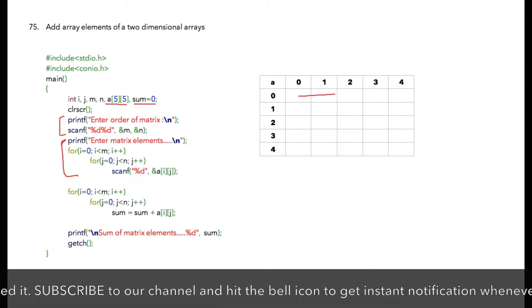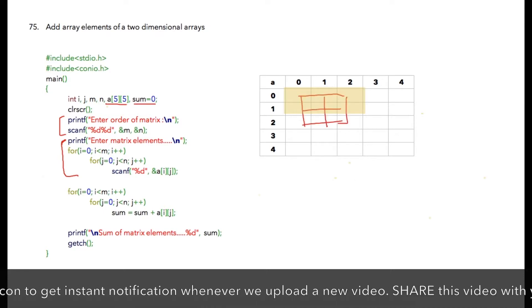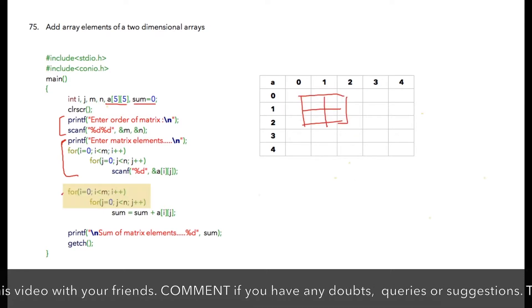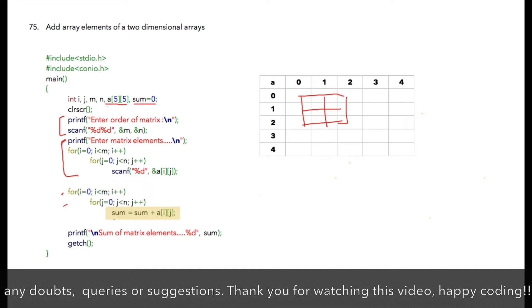We'll simply write loop for rows and columns and then write the statement sum is equal to sum plus a of ij. So all the rows and column will be iterated for performing this sum one by one.